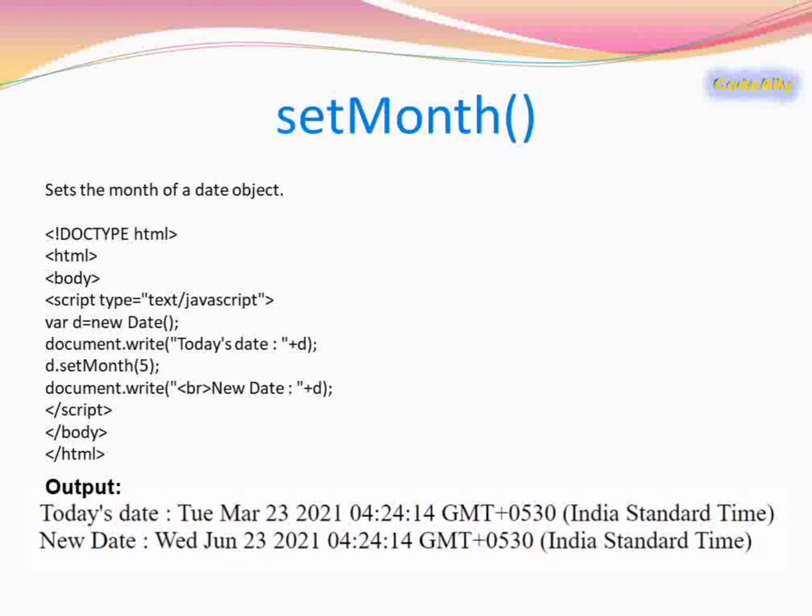The next method is setMonth(). setMonth() changes the month of the particular date. Currently the month was March, and when we write d.setMonth(5) it changes the month to June.